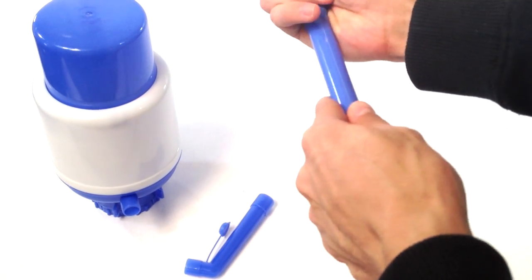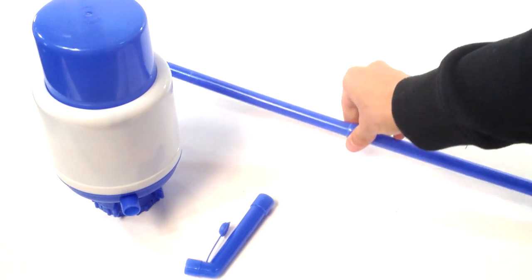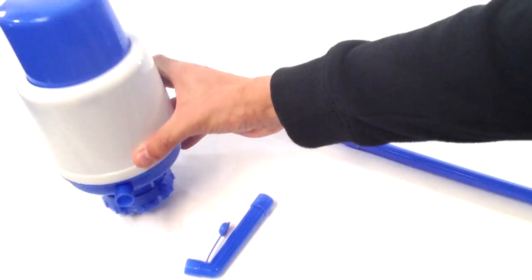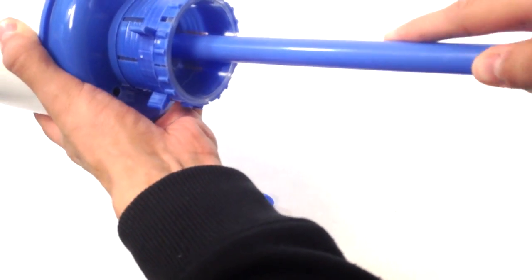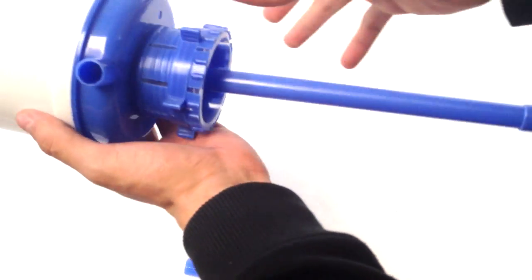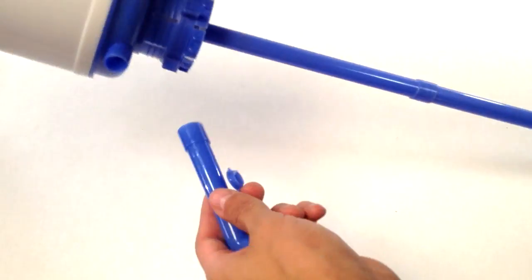To assemble, simply connect the two extension tubes, insert that long tube snugly into the bottom of the water pump, then attach the water spout to the front.